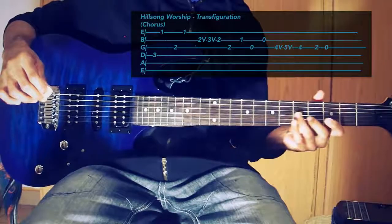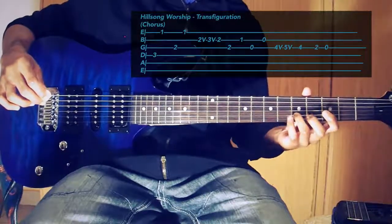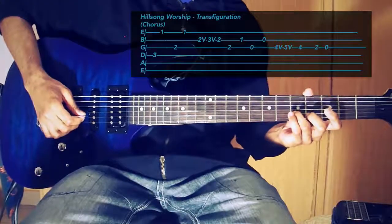Then after that you are going to move to fret 5 of the B string and you are going to do a bend.